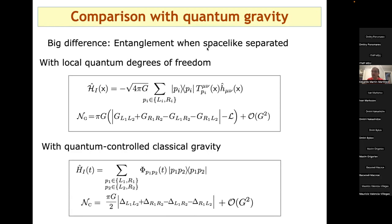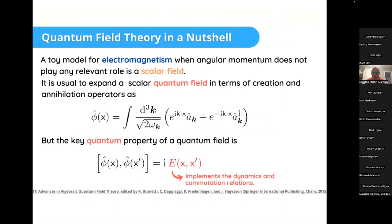An important difference: in the quantum field case, you can get the two masses entangled even when they are spacelike separated, because the masses can harvest entanglement already present in the ground state of the field — the vacuum state has entanglement between spacelike separated regions. This only occurs in the quantum case. The relationship between the two models will now be made more precise.